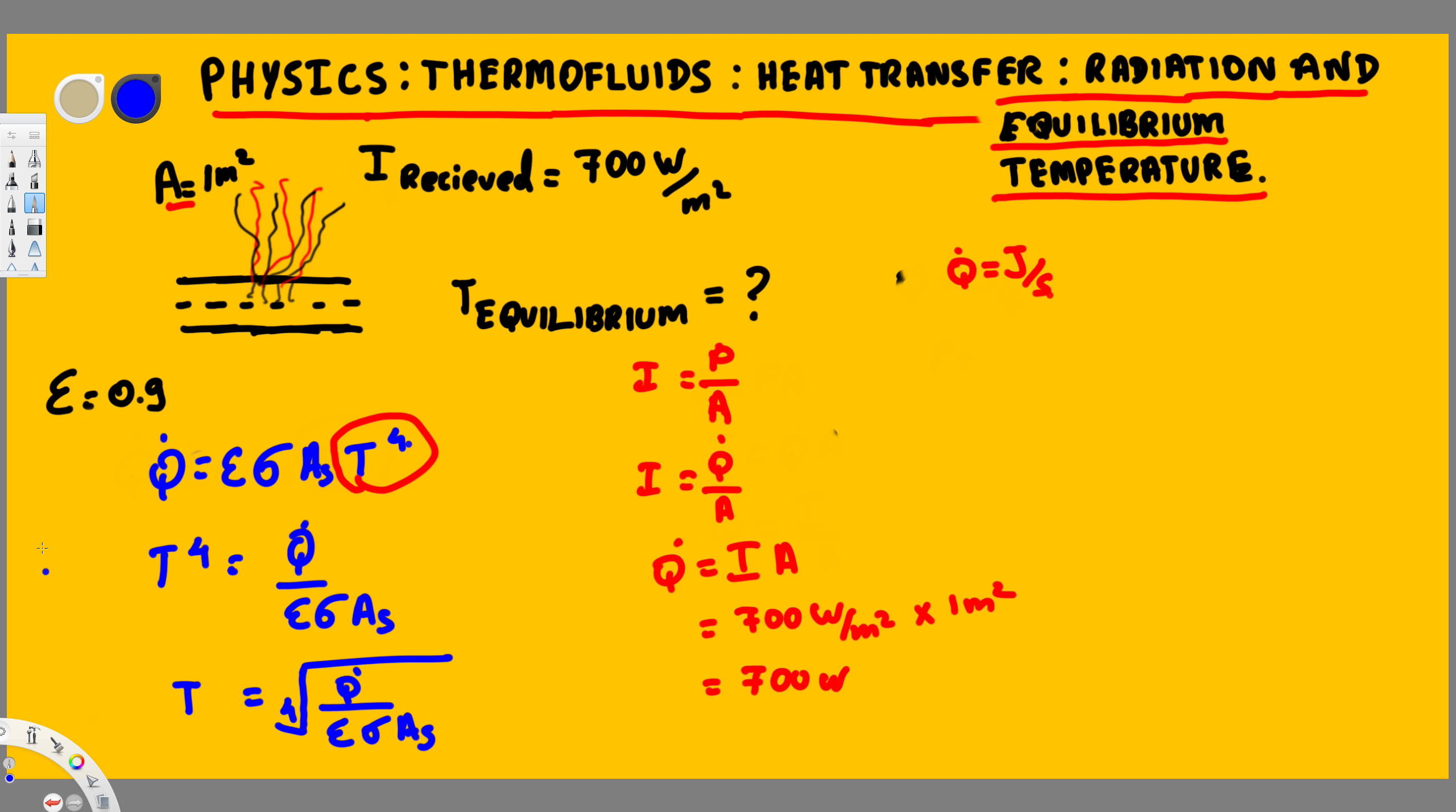Now let's plug in all the values. Let's get rid of this part. Fourth root of Q dot, we found that's 700 watts.